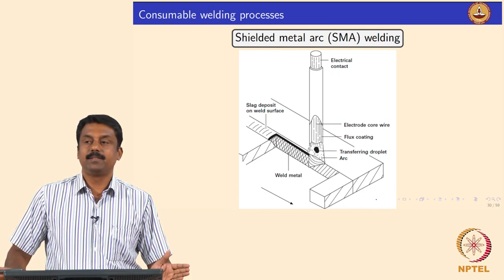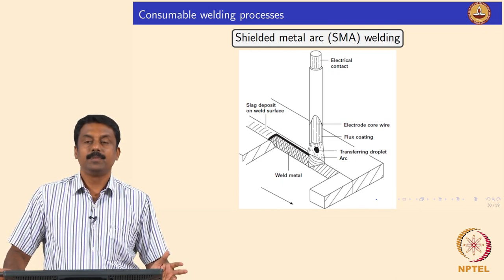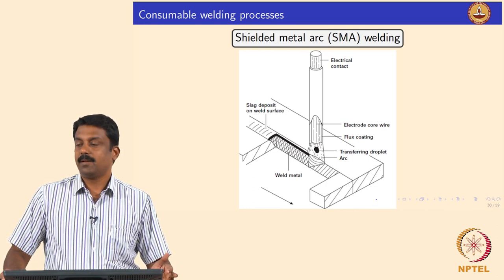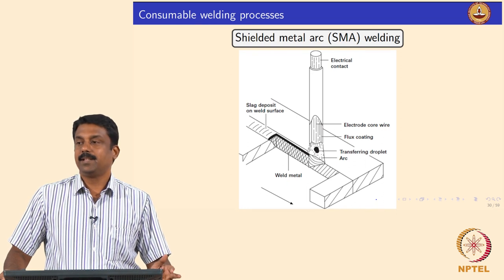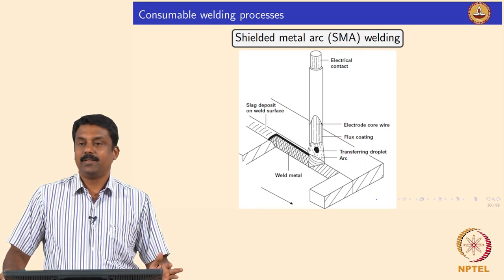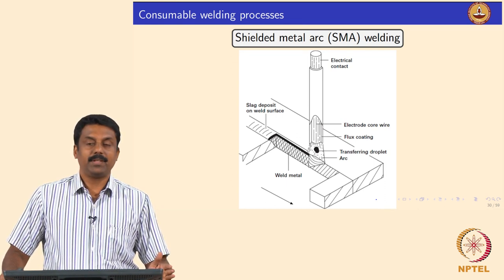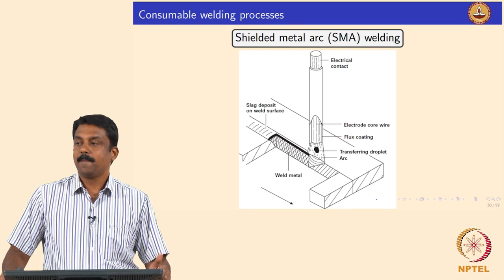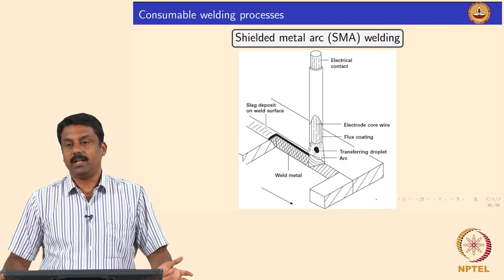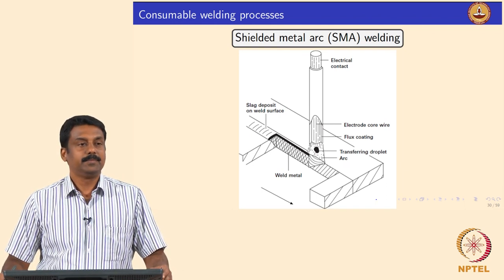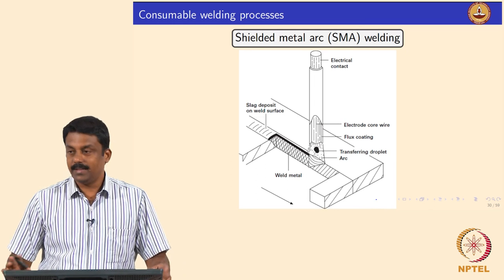In GMAW fundamentals, we looked at the system — the force balance, metal transfer forces, melting rate, how we calculate the melting rate, and the transfer modes and the influence of current on the transfer mode — what are the advantageous and disadvantageous transfers we see.